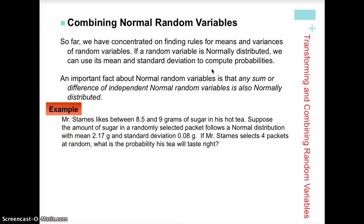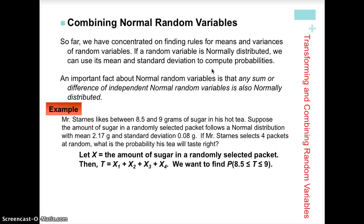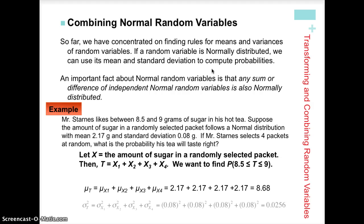Let's take a look at an example with a normal random variable — they combine in exactly the same way. Mr. Starnes likes between 8.5 and 9 grams of sugar in his hot tea. The amount of sugar in a randomly selected packet follows a normal distribution with mean 2.17 grams and standard deviation 0.08 grams. If he selects four packets at random, our new random variable T is a combination of four random variables — one per packet — all following the same distribution, and we want P(8.5 ≤ T ≤ 9).